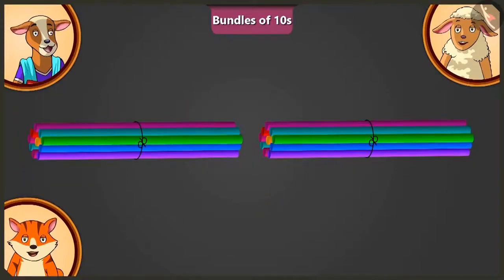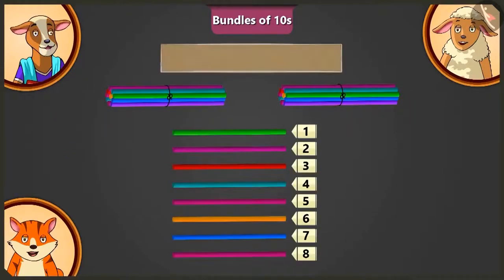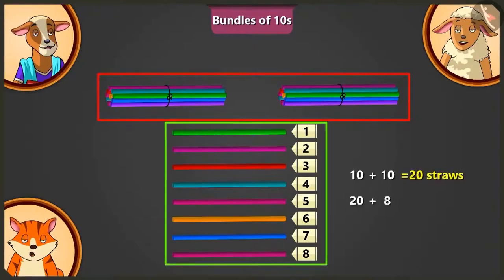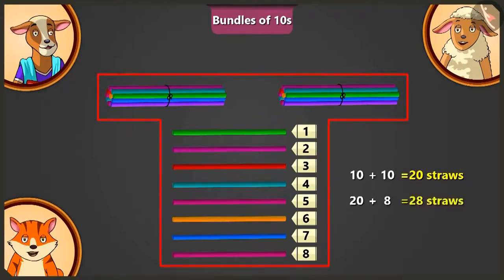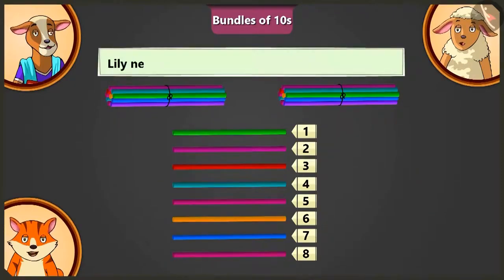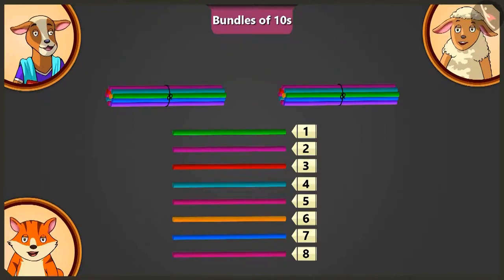I am putting these eight straws next to both the bundles. Now tell me, how many straws are there in total? Adding ten straws to ten straws makes twenty straws, and adding eight to twenty straws, there are twenty-eight straws in total. Oh wow, these are all the straws I want. Corey ma'am, but I need forty-five straws. How will we count forty-five straws? Look, Lily, there are two bundles of ten and eight straws here.